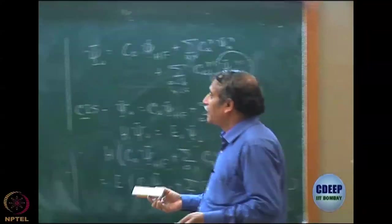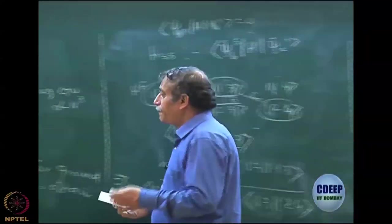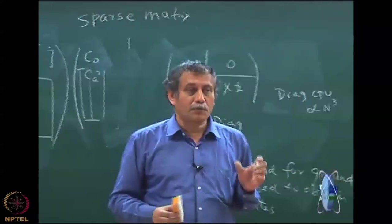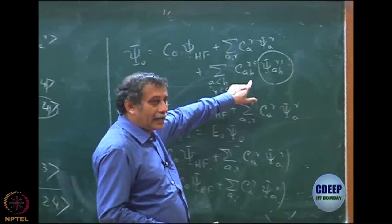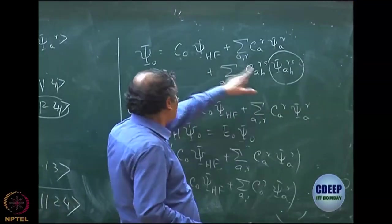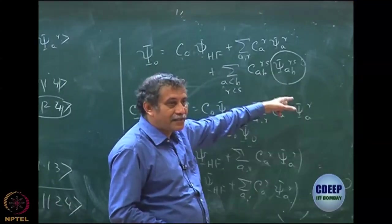What we have to do for ground state is the first set of determinants that we must include is actually doubly excited, because there is no Brillouin's theorem between Hartree-Fock and doubly excited determinant.